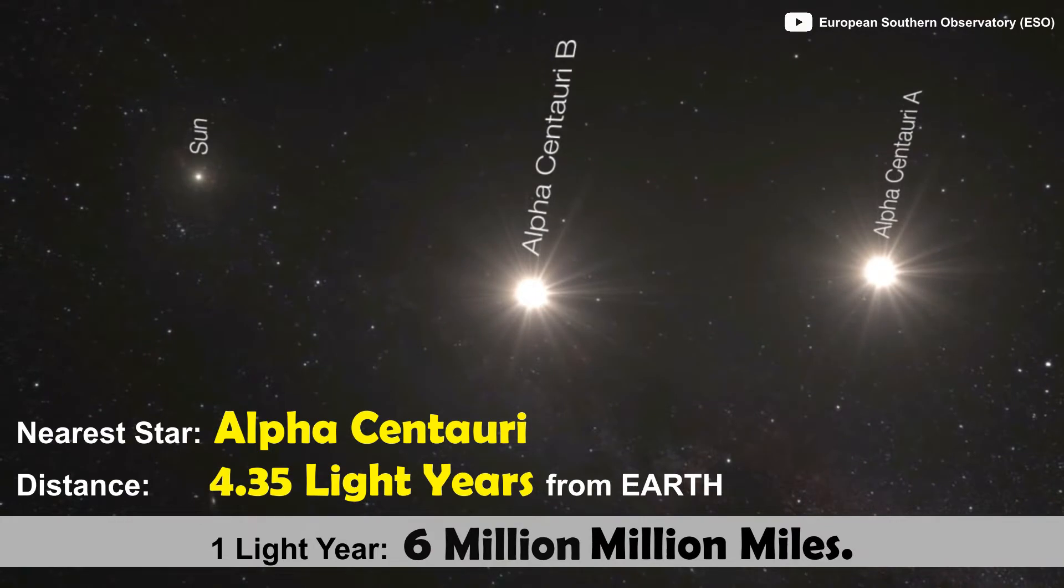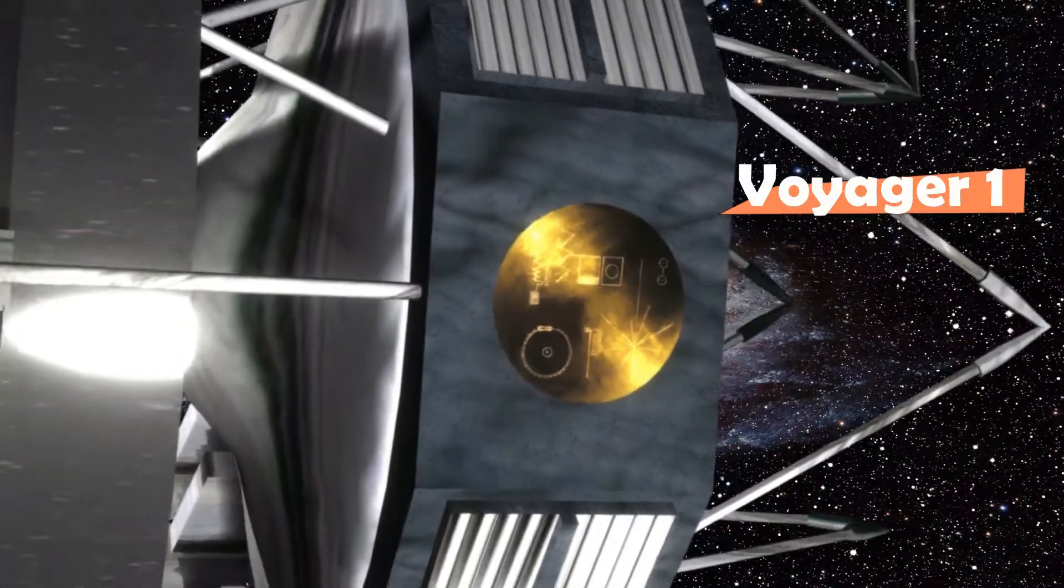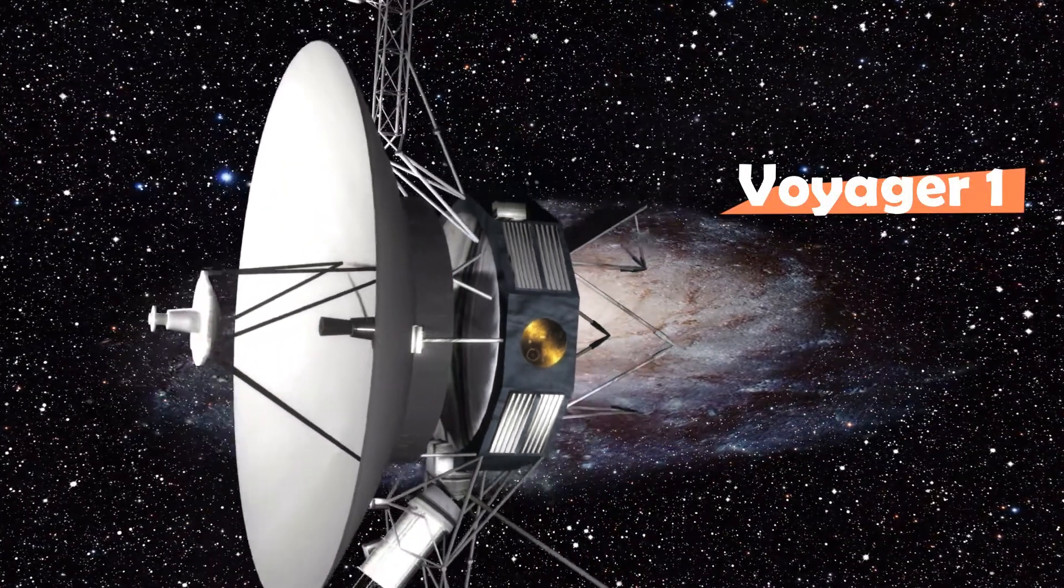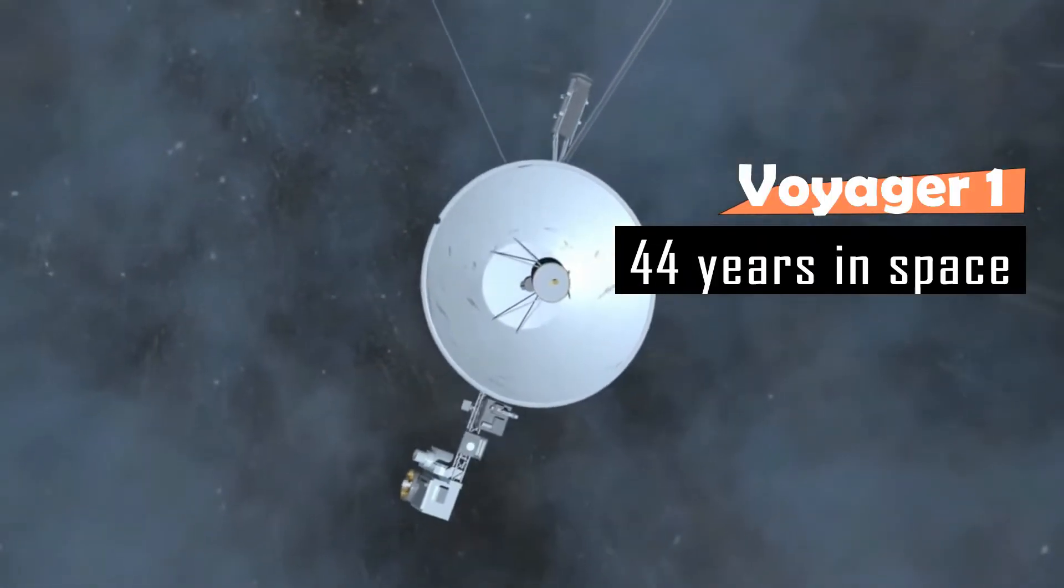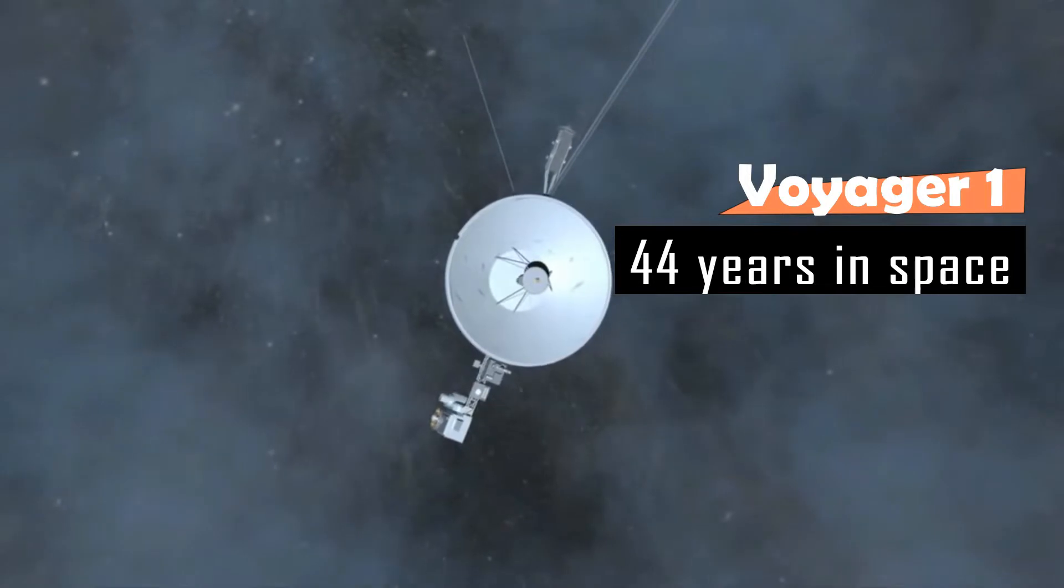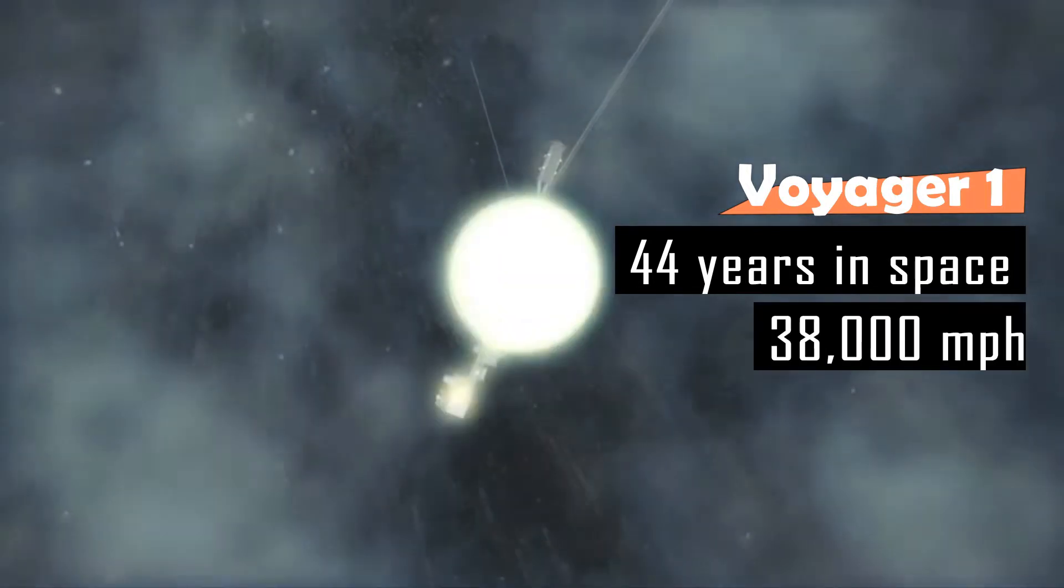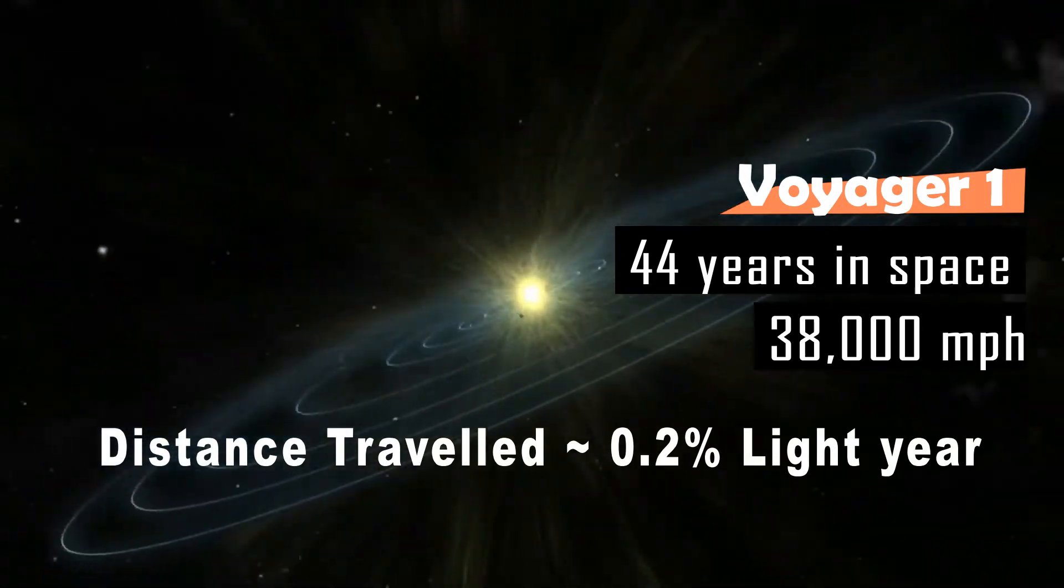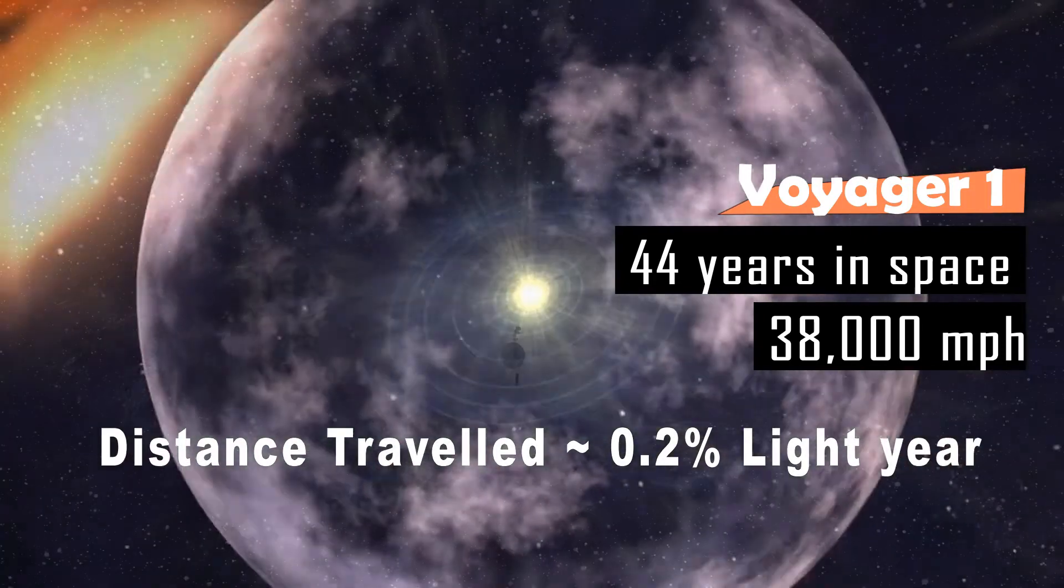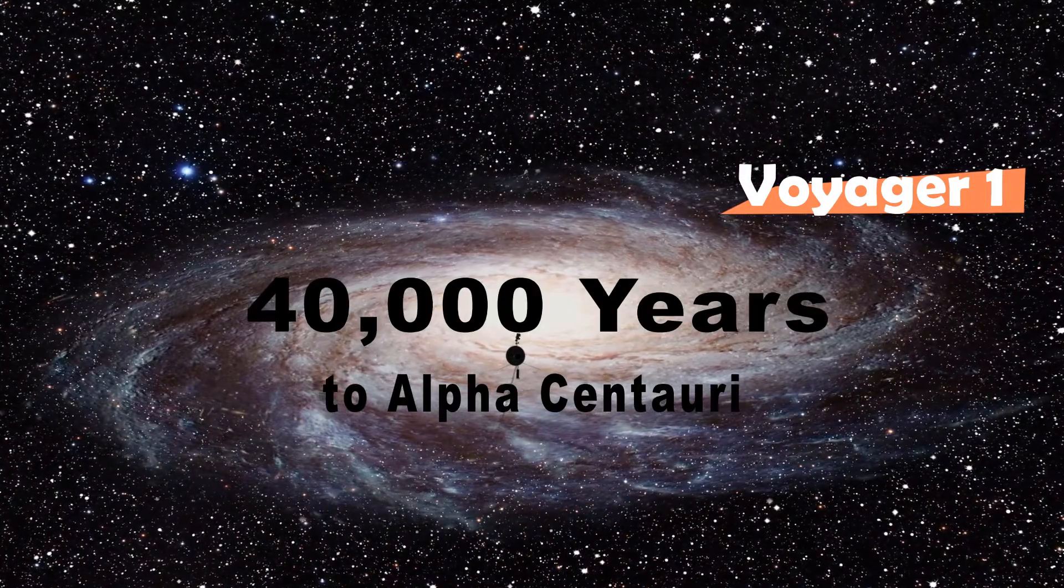One light year is equivalent to nearly 6 million million miles. Voyager 1 is the fastest outward bound spacecraft, traveling from past 44 years in space, and is the only man-made object to enter interstellar space. Voyager 1 is traveling at speed of nearly 38,000 miles per hour and has covered only 0.2% of light year in 44 years, and it will take Voyager 1 nearly 40,000 years to reach Alpha Centauri.